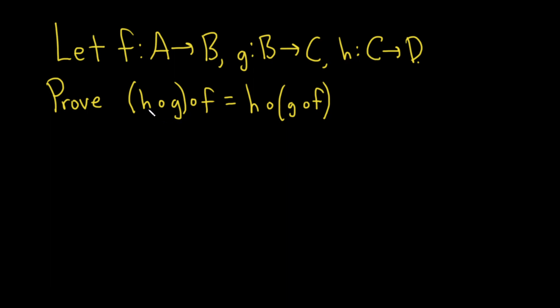And we have to prove that (h∘g)∘f is the same thing as h∘(g∘f). In other words, we have to prove that function composition is associative. That's the idea. We want to prove that it is associative.